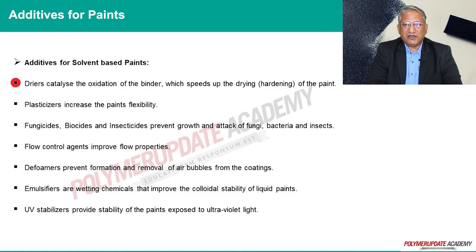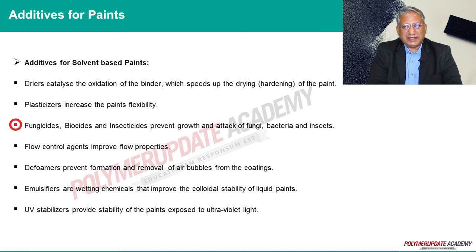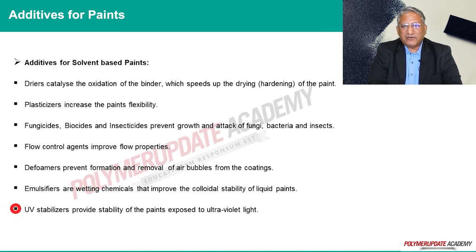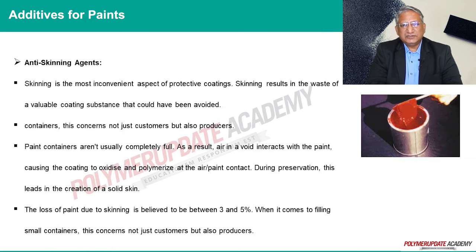Dryers accelerate the drying, that is hardening process, of paint by catalyzing the oxidation of binder. Plasticizers increase the flexibility of paints. Fungicides, biocides, and insecticides prevent growth and attack of fungi, bacteria, and insects. Flow control agents improve the flow properties. De-foamers prevent formation and removal of air bubbles from the coatings. Emulsifiers are wetting agents increasing the colloidal stability of paints in the liquid state. UV stabilizers improve stability of paint when exposed to ultraviolet light.